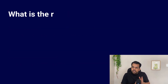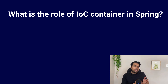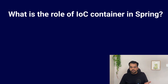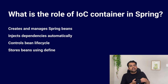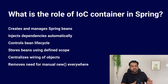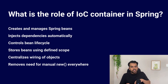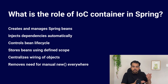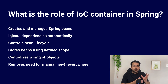Next question: what is the role of the IoC container in Spring? Spring has a container that manages beans — that container is the IoC container. It creates objects for us, injects dependencies into them, and keeps track of their lifecycle — like when to create or destroy them. It stores beans based on their scope. In real projects, this means we don't do object wiring manually; Spring loads the classes, creates the beans, injects them, and starts the application. The IoC container is why large Spring projects don't turn into a mess of 'new' keywords everywhere.